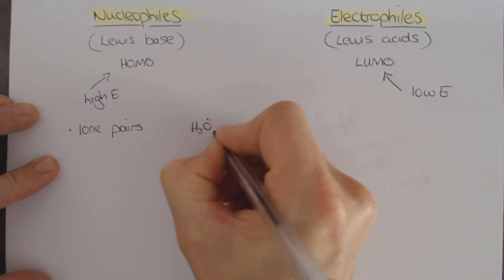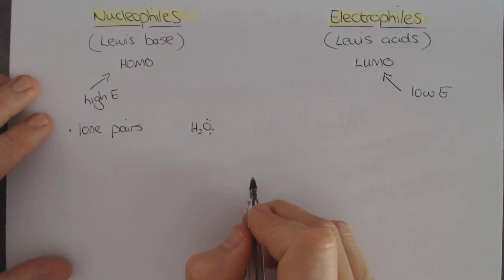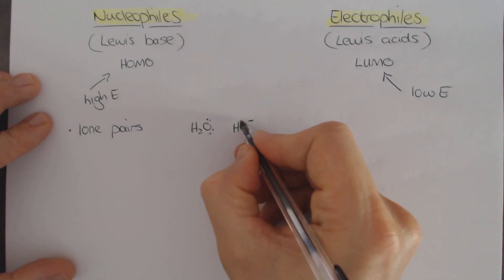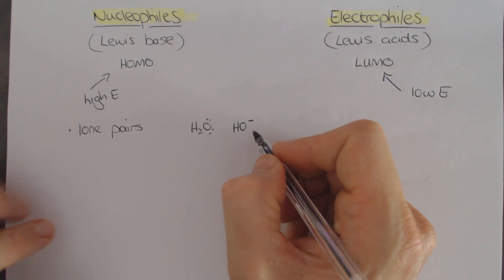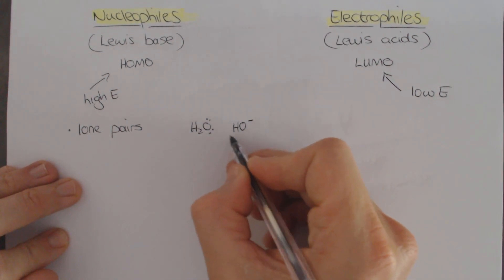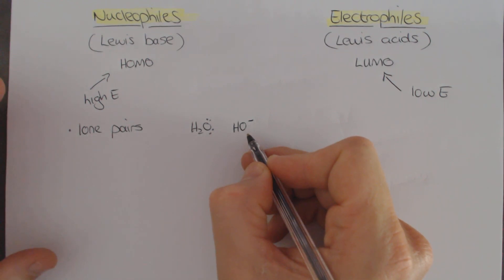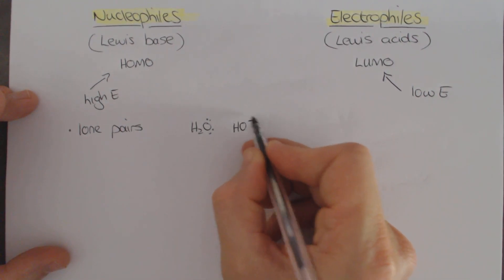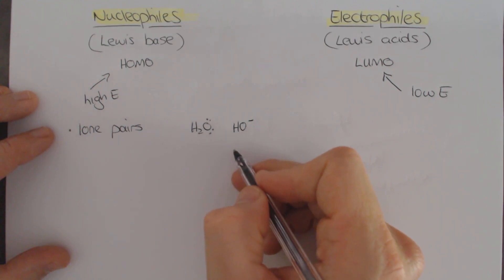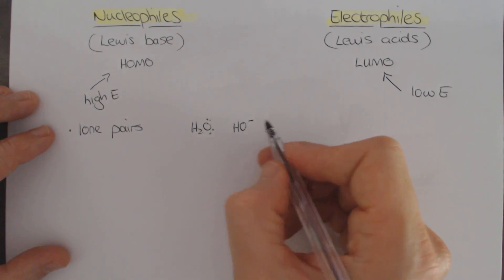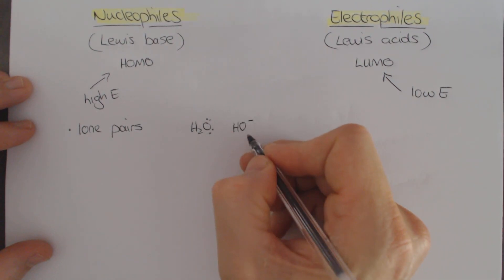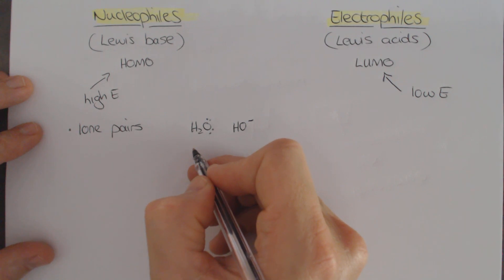Lone pairs can be found on many different things. For instance, water has lone pairs and those can be nucleophilic. We also have hydroxide. Hydroxide has three lone pairs around it but it has a negative charge. If you have a negative charge on an atom, it is a much better nucleophile than an uncharged atom. That's because the extra electrons that give it a negative charge actually push the HOMOs slightly higher. Because there's more electrons there, the energy level ends up being a bit higher. So negative charge is much better than the neutral molecule.